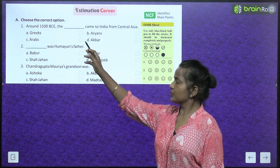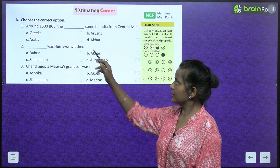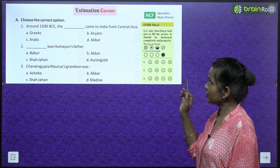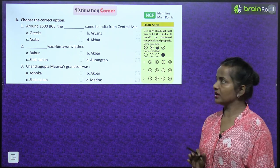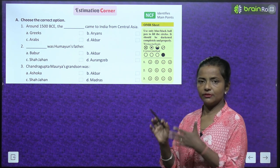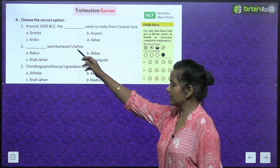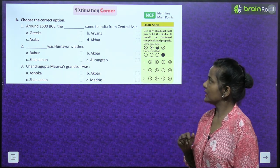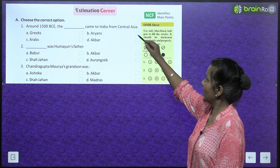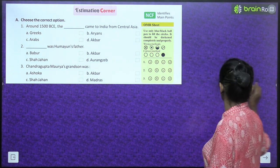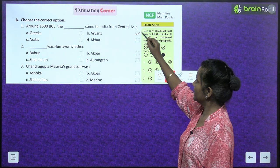Estimation corner — choose the correct option. Around 1500 BCE, the blank came to India from Central Asia. Options: Greeks, Aryans, Arabs, Akbar. The Aryans came, so we'll take option B — Aryans.